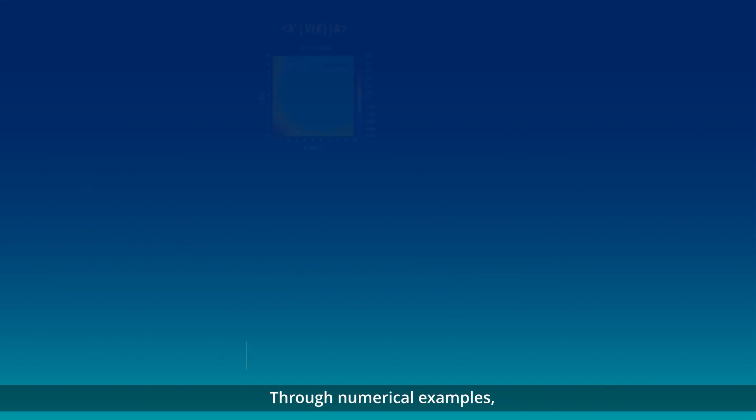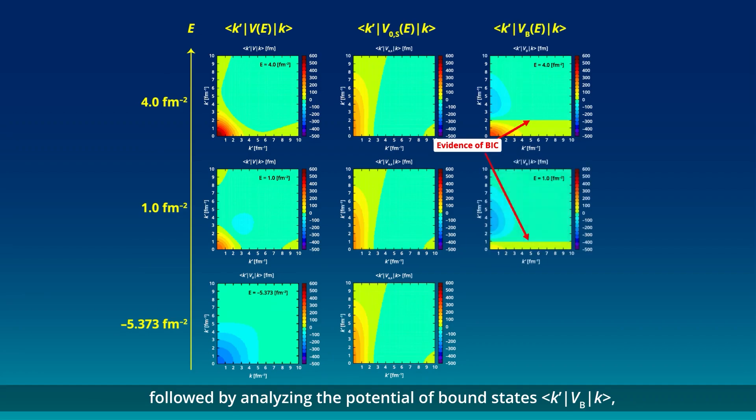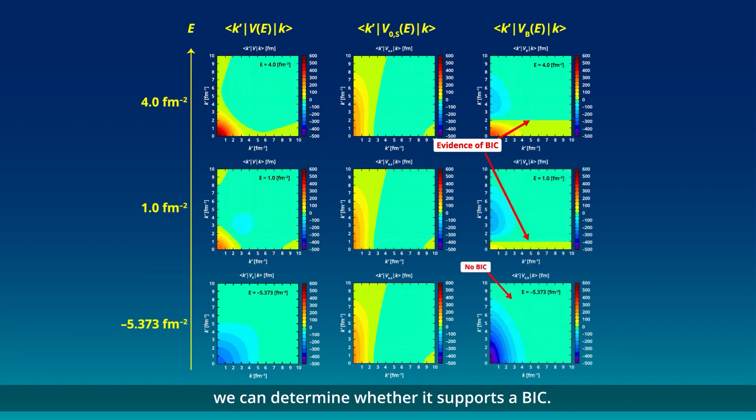Through numerical examples, the study illustrates that for a given hermitian potential, through SB decomposition, followed by analyzing the potential of bound states K'VbK, we can determine whether it supports a BIC.